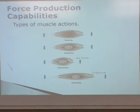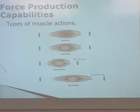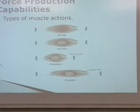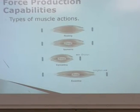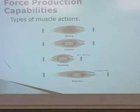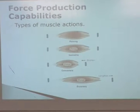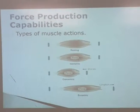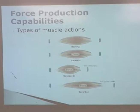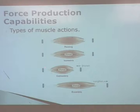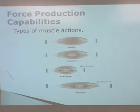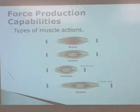Concentric force production is when we see a shortening of the muscle. Here's my shortening of the sarcomere. Our cross-bridge formation and sliding filament theory gives us a very good picture of what's going on when we see a concentric shortening of the muscle. Concentric force production involves a larger force being produced in the muscle than is being applied to the muscle.